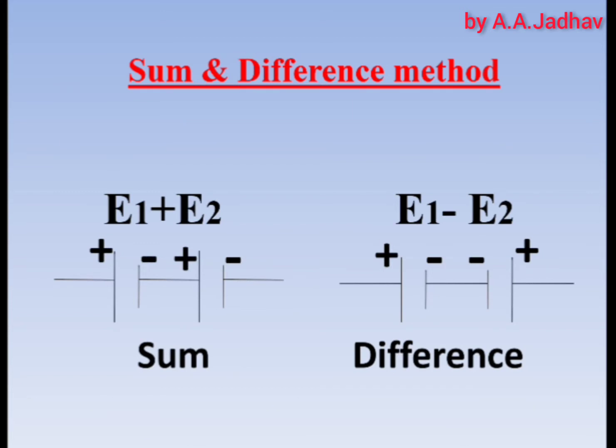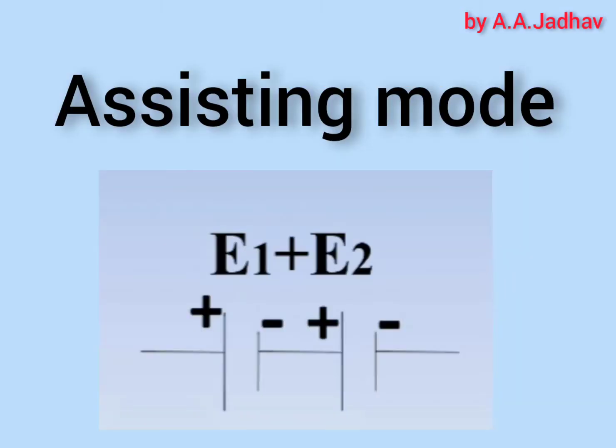In this video we are going to discuss how to compare EMFs of two cells by using a potentiometer, using the sum and difference method. In this method we are going to use both the cells at a time in the circuit but in two different combinations: assisting mode and opposing mode.